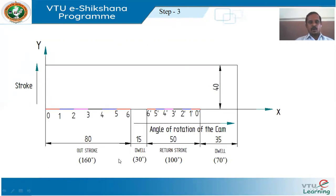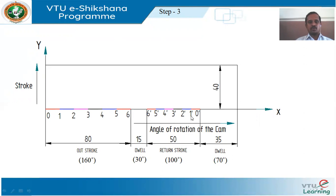Under step 3, according to the displacement diagram procedure, we select an even number to divide the outstroke distance and return stroke distance. We need to divide the outstroke and return stroke distance with any even number of equal parts. Here I will select that even number as 6. If we divide the 80 mm outstroke into 6 equal parts (80/6), from the beginning of outstroke we name the divisions 0, 1, 2, 3, 4, 5, 6. Similarly, during the return stroke divide 50 mm into 6 equal parts, naming divisions from left to right as 6′, 5′, 4′, 3′, 2′, 1′, 0′.